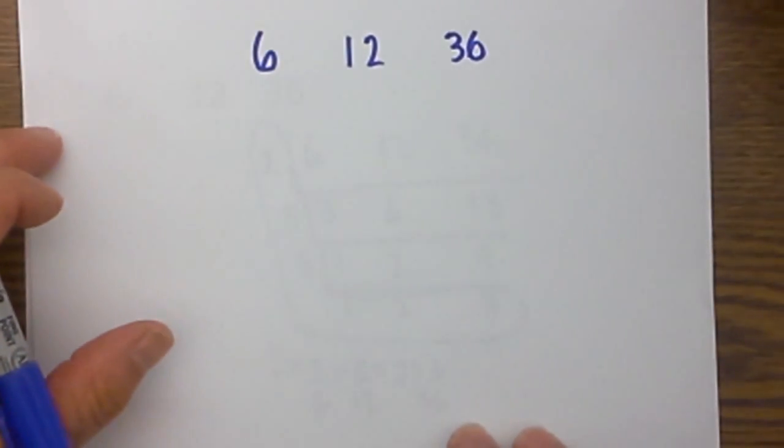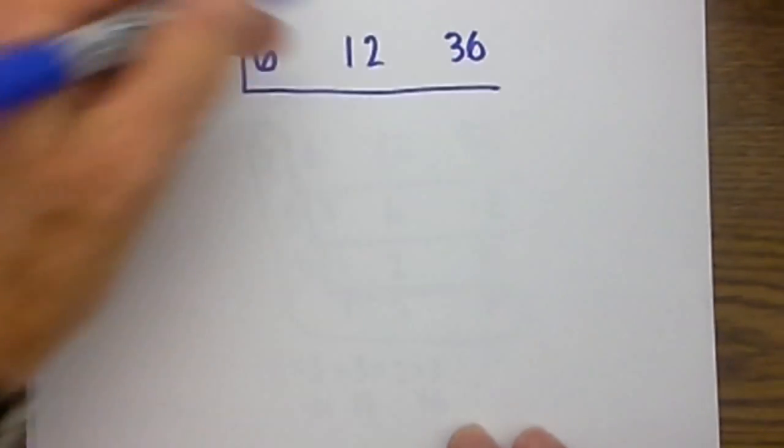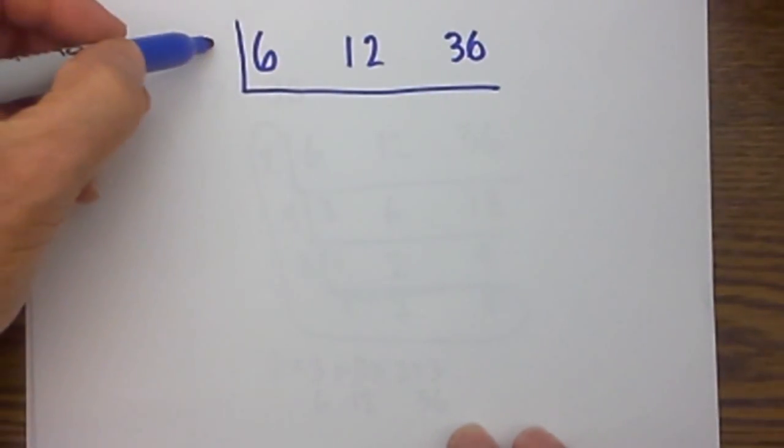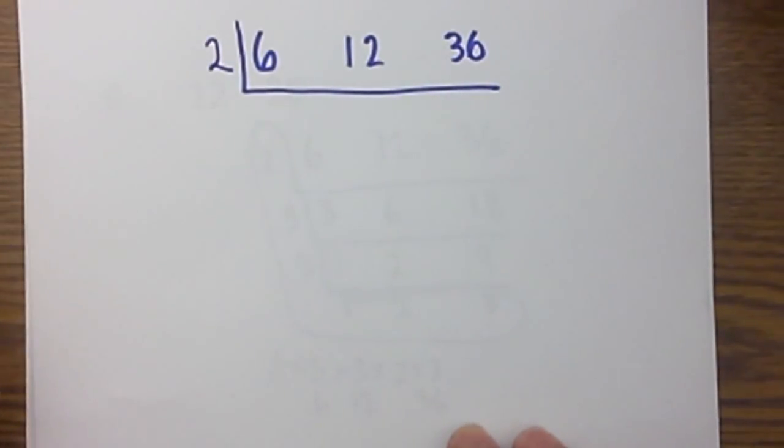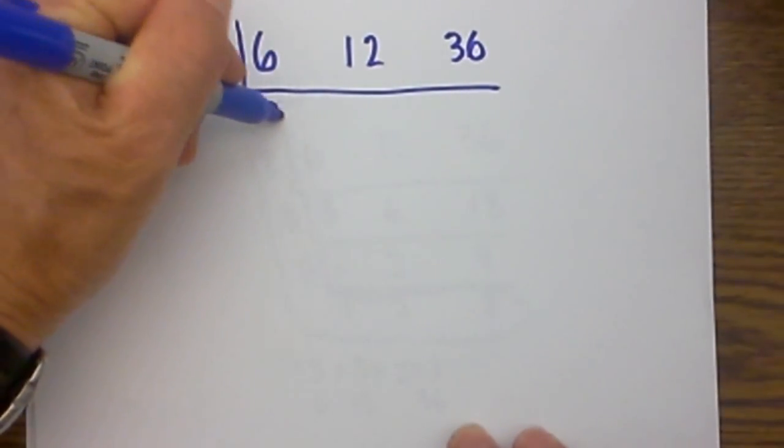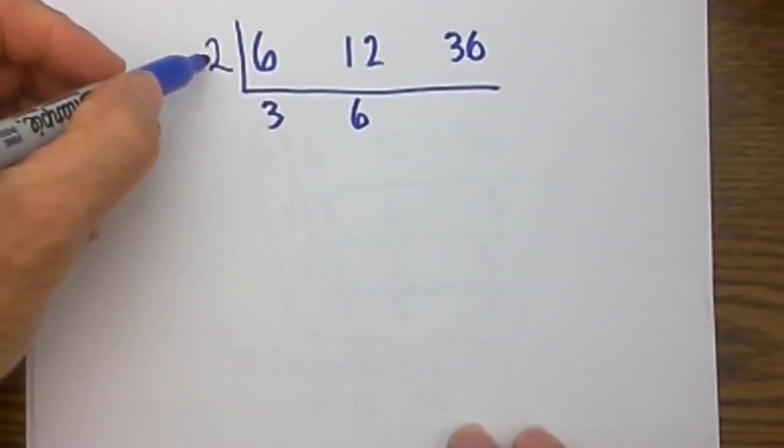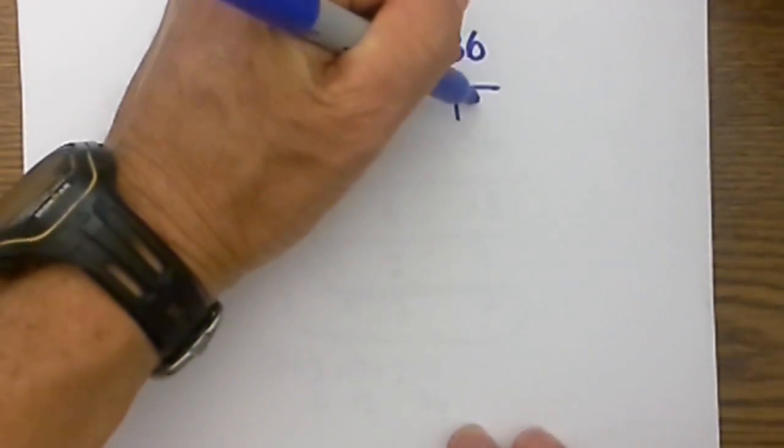I will start with the ladder method for 6, 12, and 36. So I will draw a line underneath and divide it by the smallest prime number that will go evenly into these numbers and that will be 2. 2 goes into 6 three times, 2 goes into 12 six, and 2 goes into 36 eighteen.